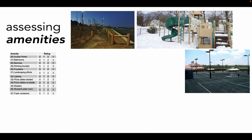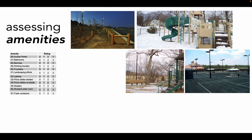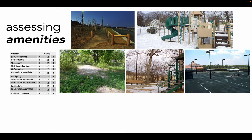An amenity is mediocre if it's in decent condition but requires some repair, cleaning, or expansion throughout the resource in order to really encourage use. This playground only appears to have one light, which may not be sufficient for its size. Similarly, the landscaping efforts surrounding this trail are definitely in need of maintenance, but the path itself is still usable. We would give both of these examples a 2. Finally, an amenity is poor if it's basically unusable.